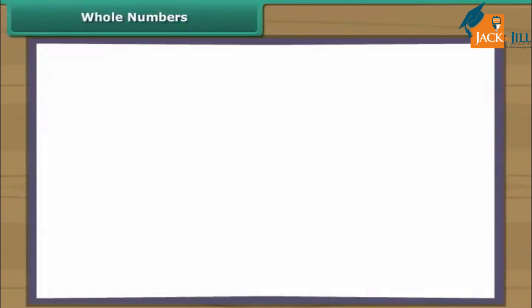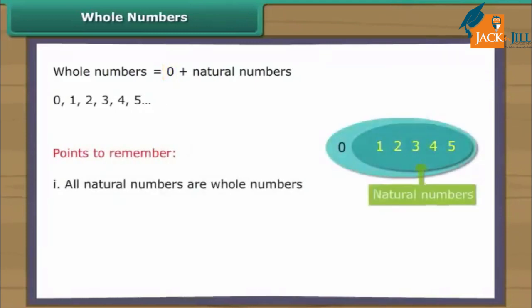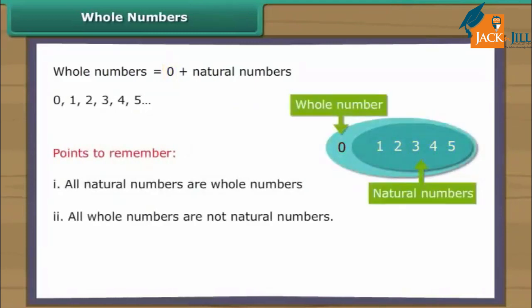Whole numbers. Whole numbers include zero and all the natural numbers. Points to remember: one, all natural numbers are whole numbers. Two, all whole numbers are not natural numbers. Three, there is no largest whole number.